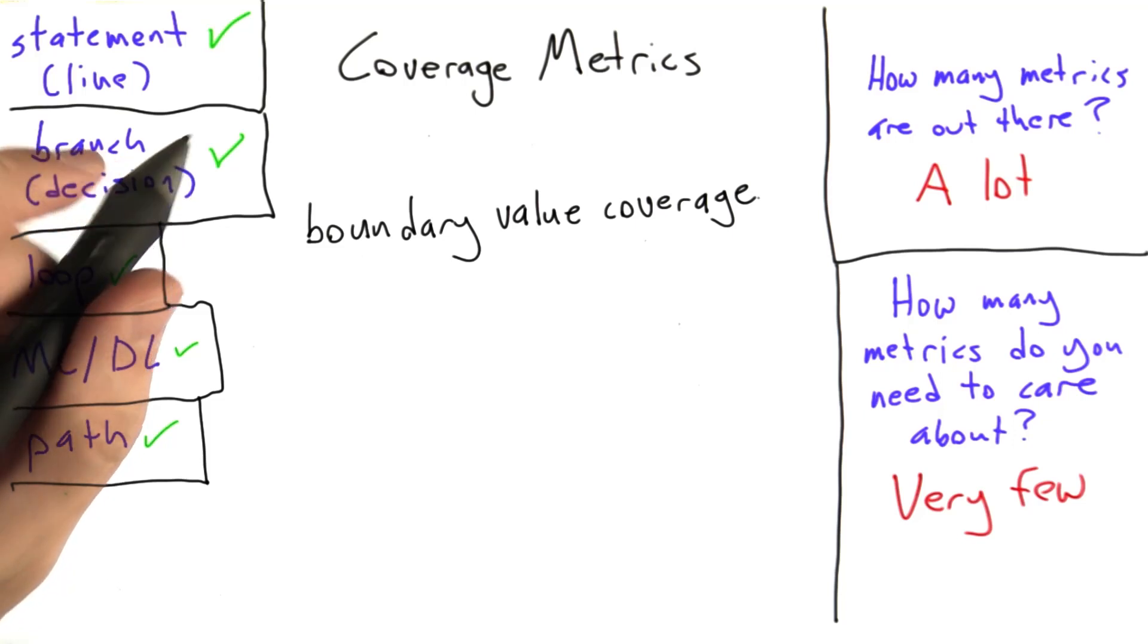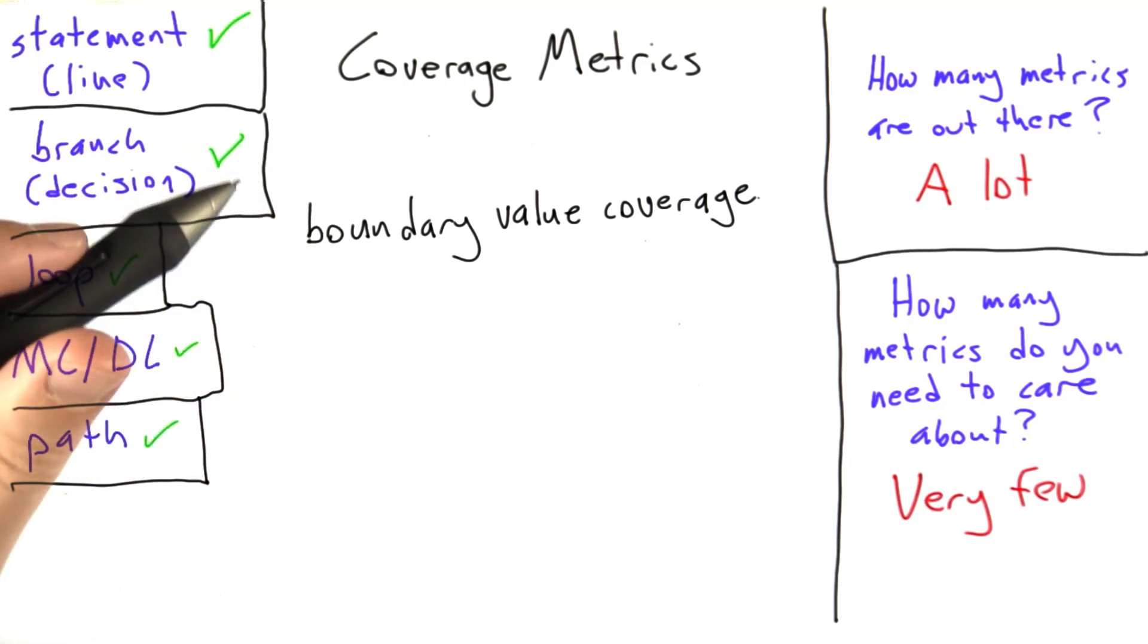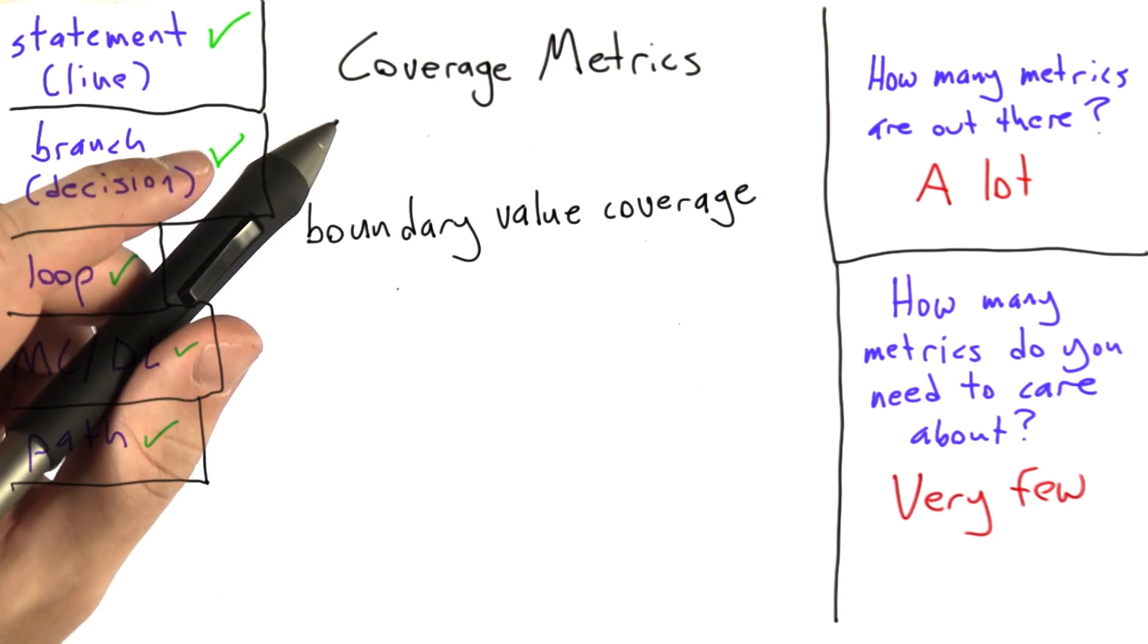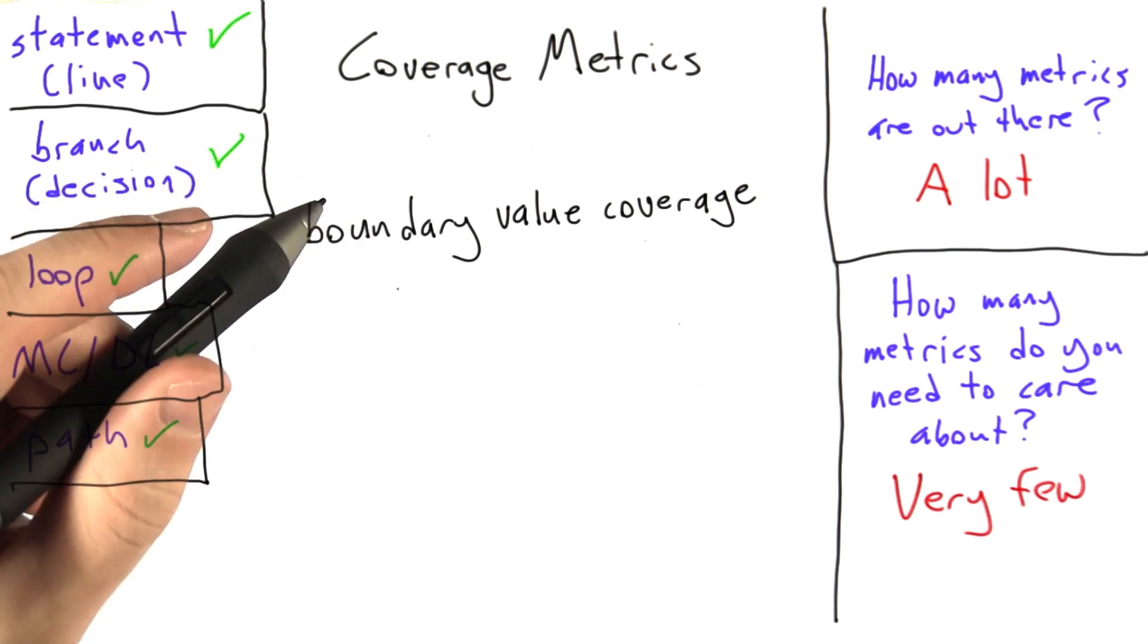The next kind of coverage I want to talk about is boundary value coverage. Boundary value coverage, unlike some of the other coverage metrics we looked at, doesn't have an especially tight technical definition. People use it to mean different things. We're going to look at it in a broad sense.